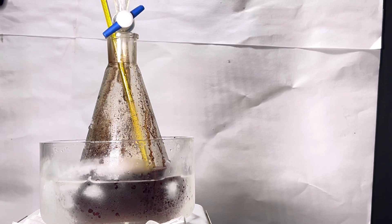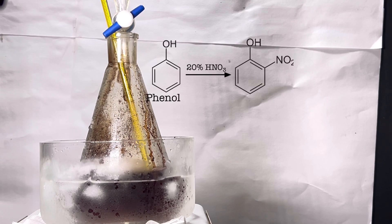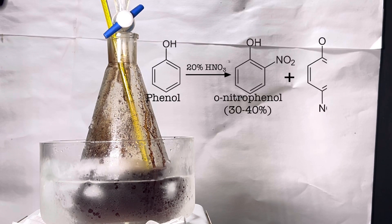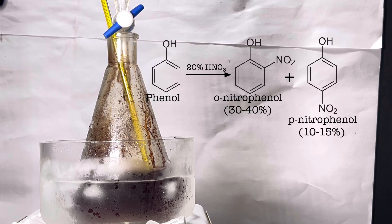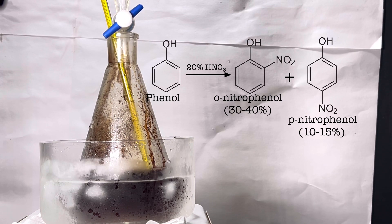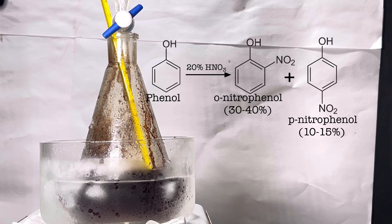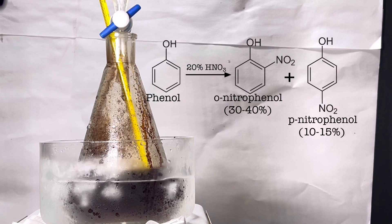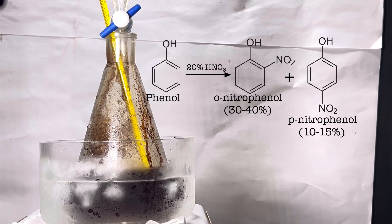Phenols nitrate so rapidly that mononitration can be achieved only by the use of dilute nitric acid at room temperature. Under these conditions the concentration of nitronium ion is low and most of the reaction results from nitrosation by the nitrosonium ion NO+, followed by rapid oxidation to the nitro compound. Some nitrous acid is always present in the solution and this catalyzes the reaction forward.